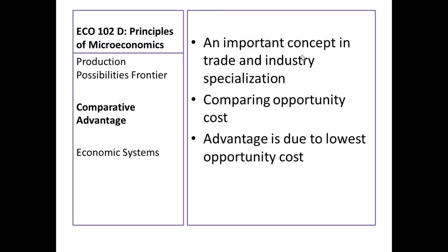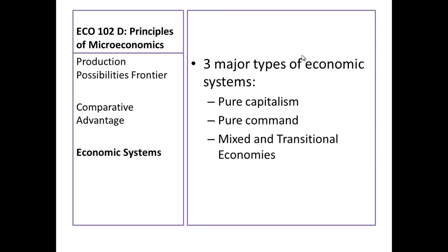We're going to finish Chapter 2 by talking about economic systems. There are three major types of economic systems: pure capitalism, pure command, and mixed and transitional economies.